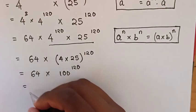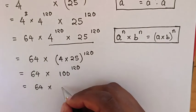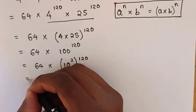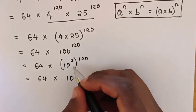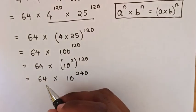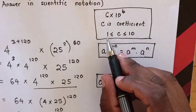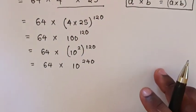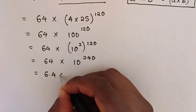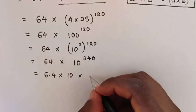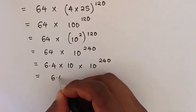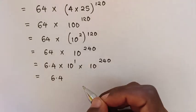So, this will be equal to 64 times 100, which is the same as 10 squared, power of 120. Then, this will be equal to 64 times 10 power of 2 times 120, which is 240. Then, this 64 should be between 1 and 10 as the coefficient. So, 64 is the same as 6.4 times 10. This gives us 6.4 times 10 power of 1, times 10 power of 240.